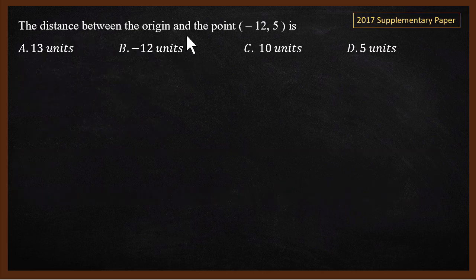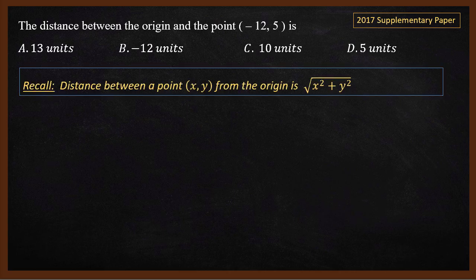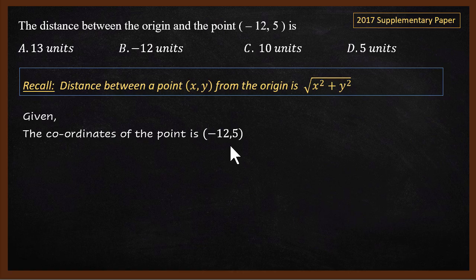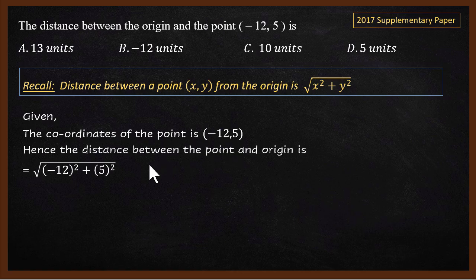Now let's look at another question where we find the distance between the origin and a point (−12, 5). Using the distance formula: √(x² + y²) from origin. Hence the distance is √[(−12)² + 5²]. Minus 12 squared: x is −12, so x² = (−12)² = 144. y = 5, so y² = 25.